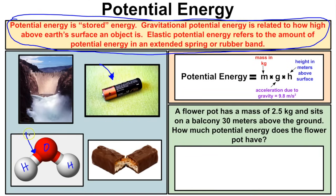A Snickers bar also has potential energy stored in it. We eat it, digest it, and break it down into other forms of energy that allow us to move throughout the day and allow our brains to process information. Similarly, if we stretch a rubber band, that is an example of elastic potential energy.